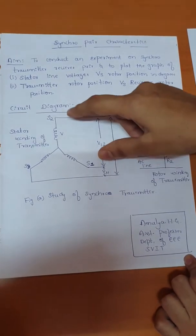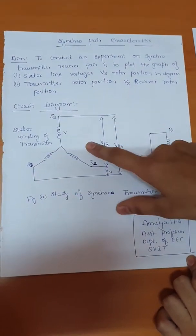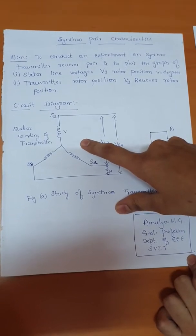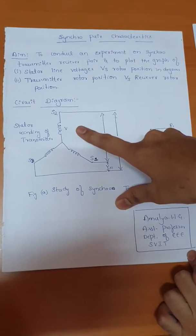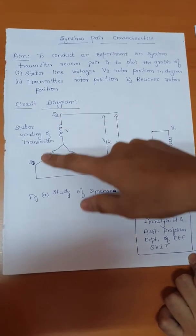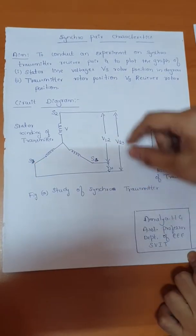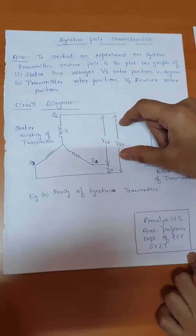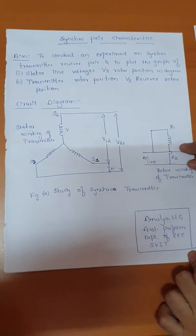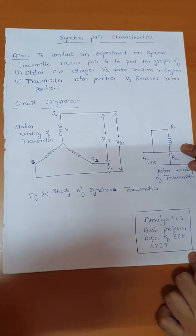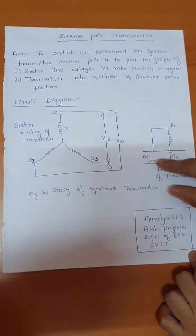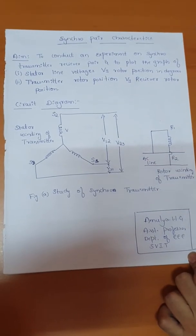You can observe these are the three-phase windings connected in a star form — that is the stator S2, S1, and S3. These are the voltages across each of the windings. This is the rotary part and it has been connected to the AC supply.